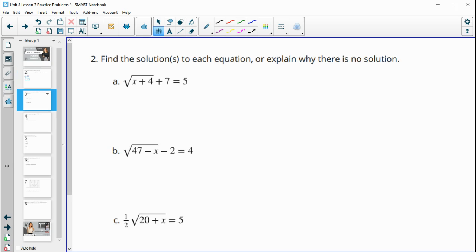Number two, find the solution or solutions to each of the equations or explain why there isn't a solution. So we're going to isolate the square root first by subtracting seven from both sides. So that's going to give us the square root of x plus four and then equals negative two. And so you always want to isolate that square root. And now we see that there's no solution because a square root cannot equal a negative number. So when we square root something, it's not going to be negative. So no solution to part a.